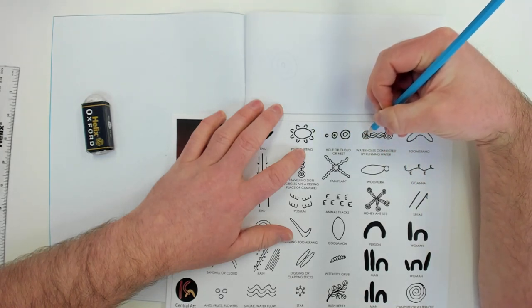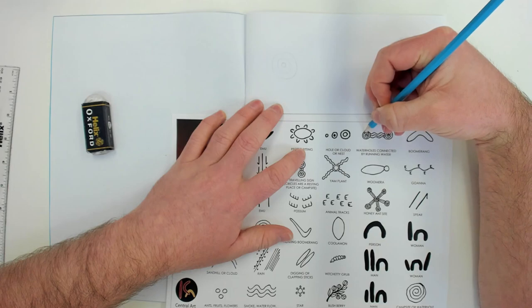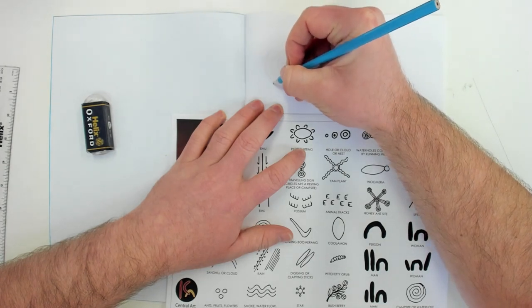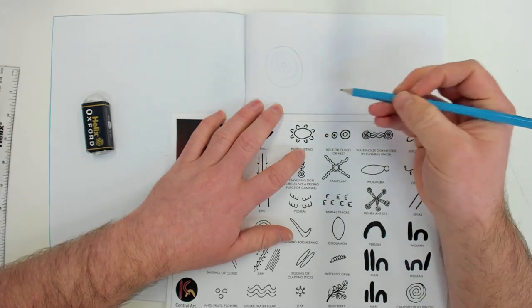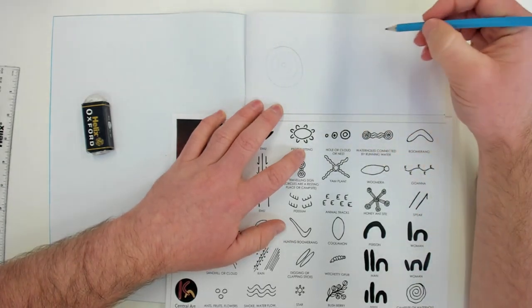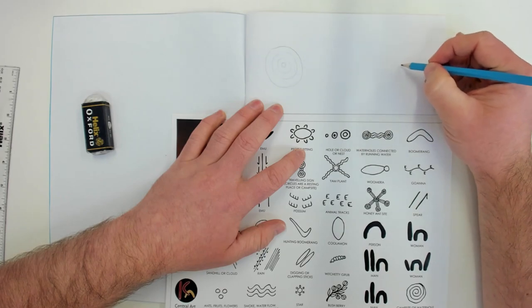How many circles? Dot in the middle. One, two, three rings. Dot in the middle. One, two, three rings. It doesn't have to be perfect. Obviously these were drawn in sand and then removed afterwards.